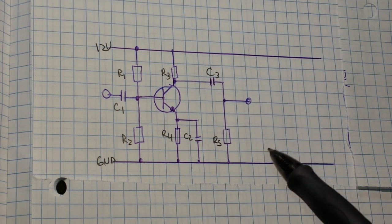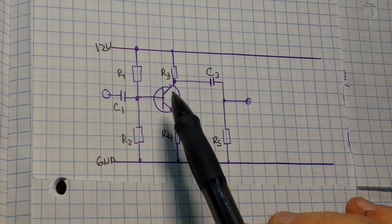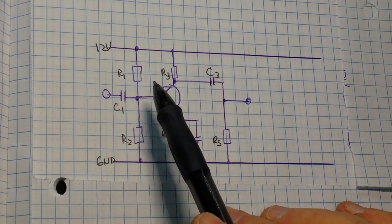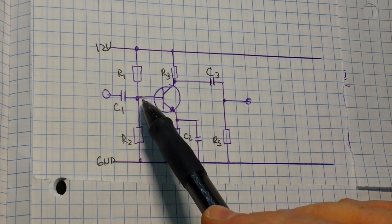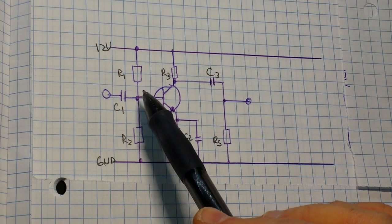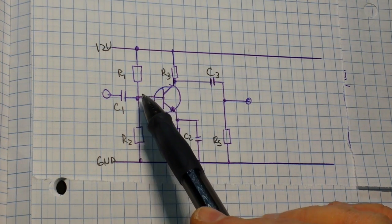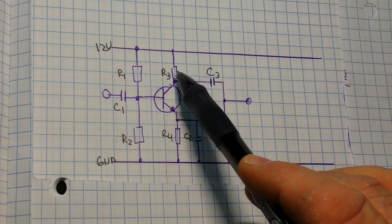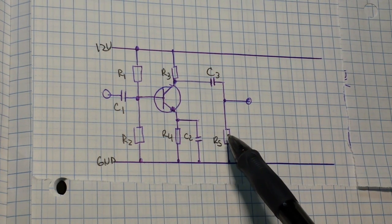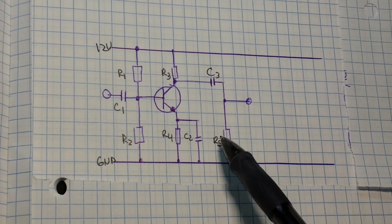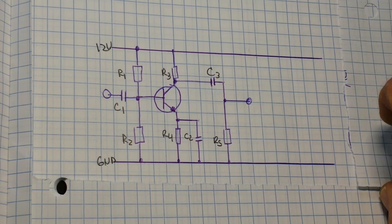And this is what we're talking about when we talk about biasing. We have a voltage divider here across our base that's going to limit and provide a constant voltage at the base. We have a current limiting resistor at the collector, one at the emitter, and one on our output to provide a small load.